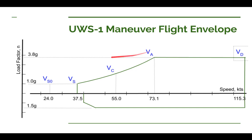At our 3.8 G, we have our speed of 73.1 knots for V sub A. And our dive speed out here is at 115.3 knots. Now that's all on the positive side.